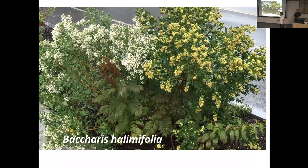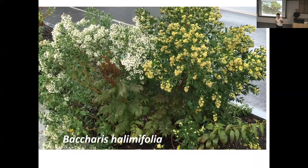Baccharis halimifolia is a native plant on the coast; it comes in male and female — it's dioecious. The male has all the stamens; the female shows seeds starting to form from pollination of the male. It's blooming right now — very late to bloom. This again is a seaside plant that thrives in droughty, wet, and salty soil.